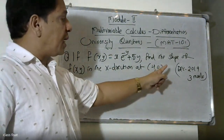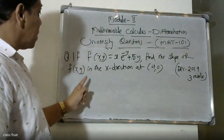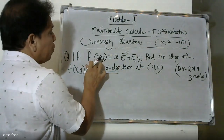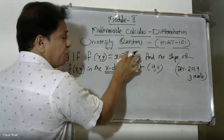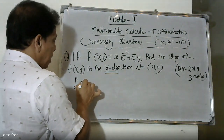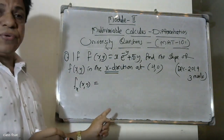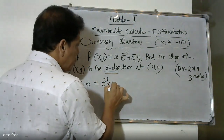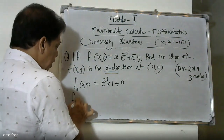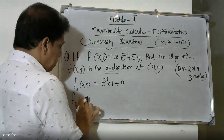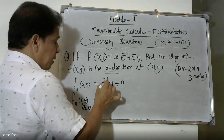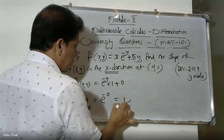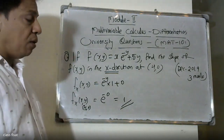For f(x, y) = x·e^(−y) + 5y, find the slope in the x-direction by partially differentiating with respect to x at point (4, 0). With x value 4 and y value 0, e raised to minus 0 equals e raised to 0, which equals 1. Therefore the slope in the x-direction is 1.